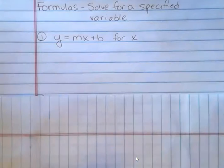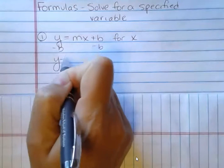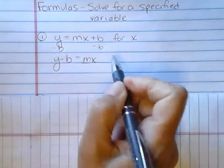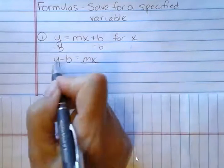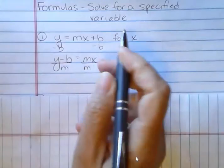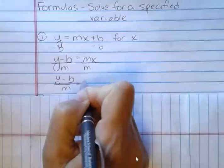We want to get x by itself in this first one, so we're going to get rid of the b by subtracting b from both sides. And then we're going to divide both sides by m because we're solving for x. And so we get y minus b over m equals x.